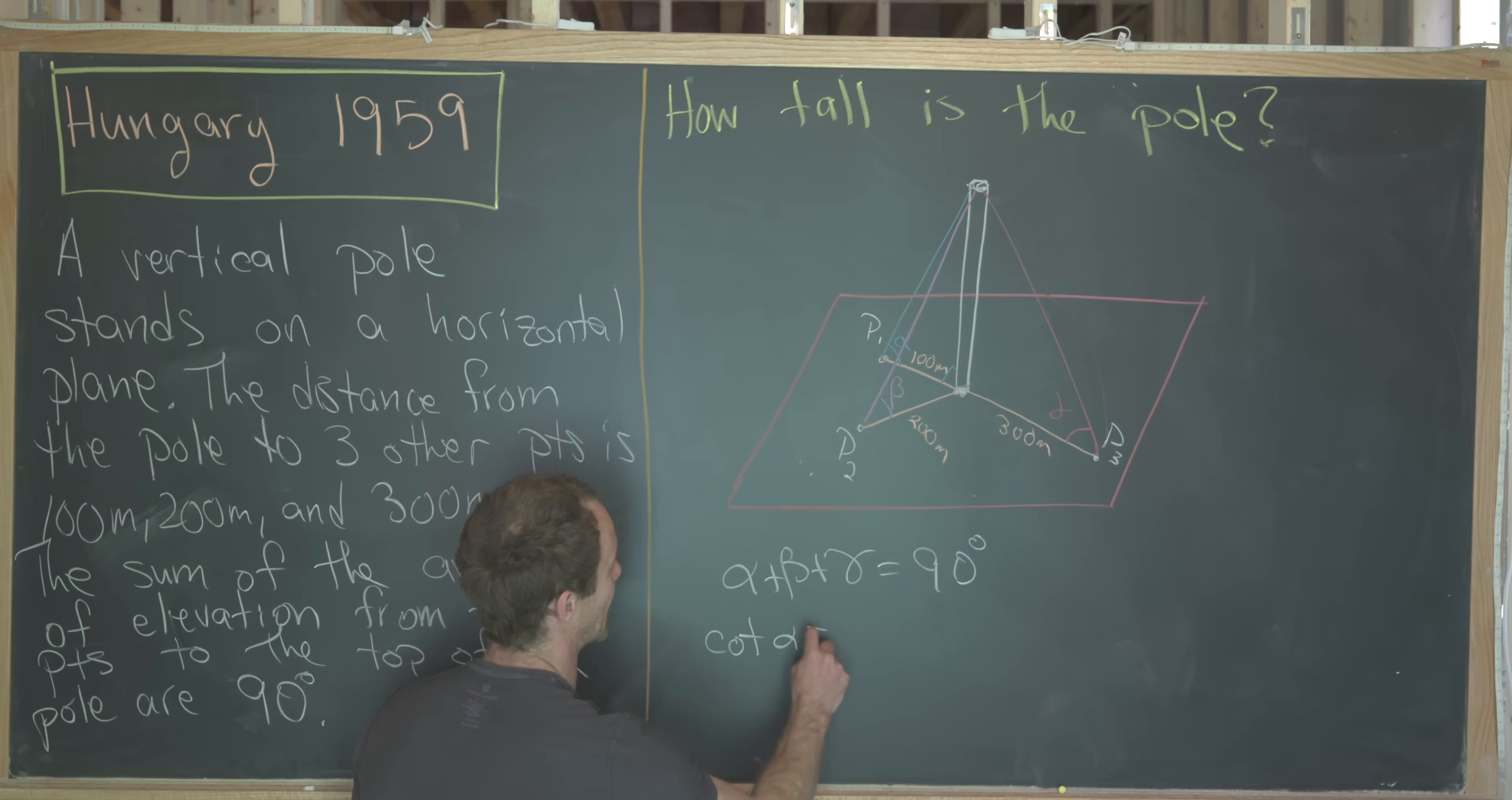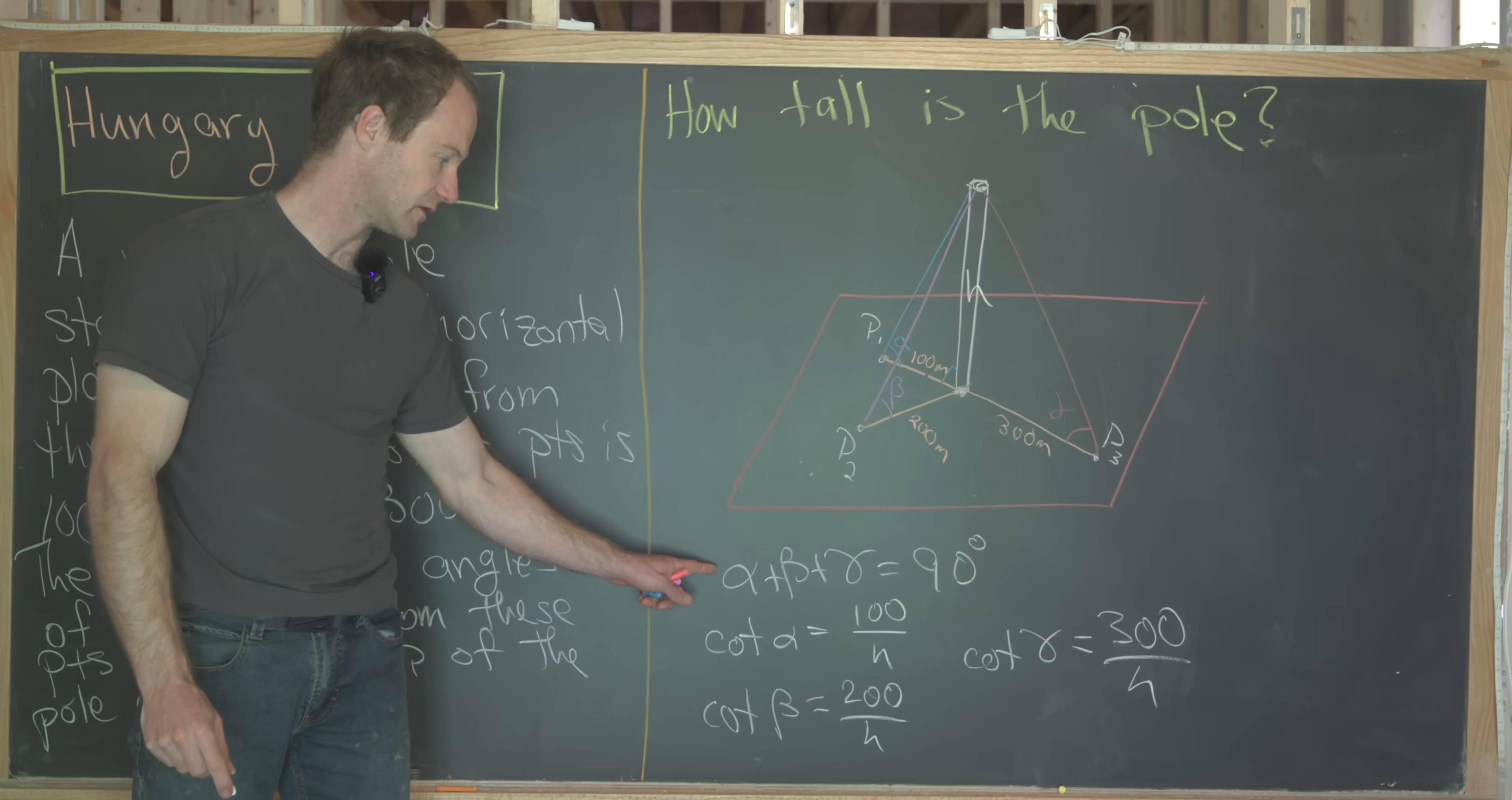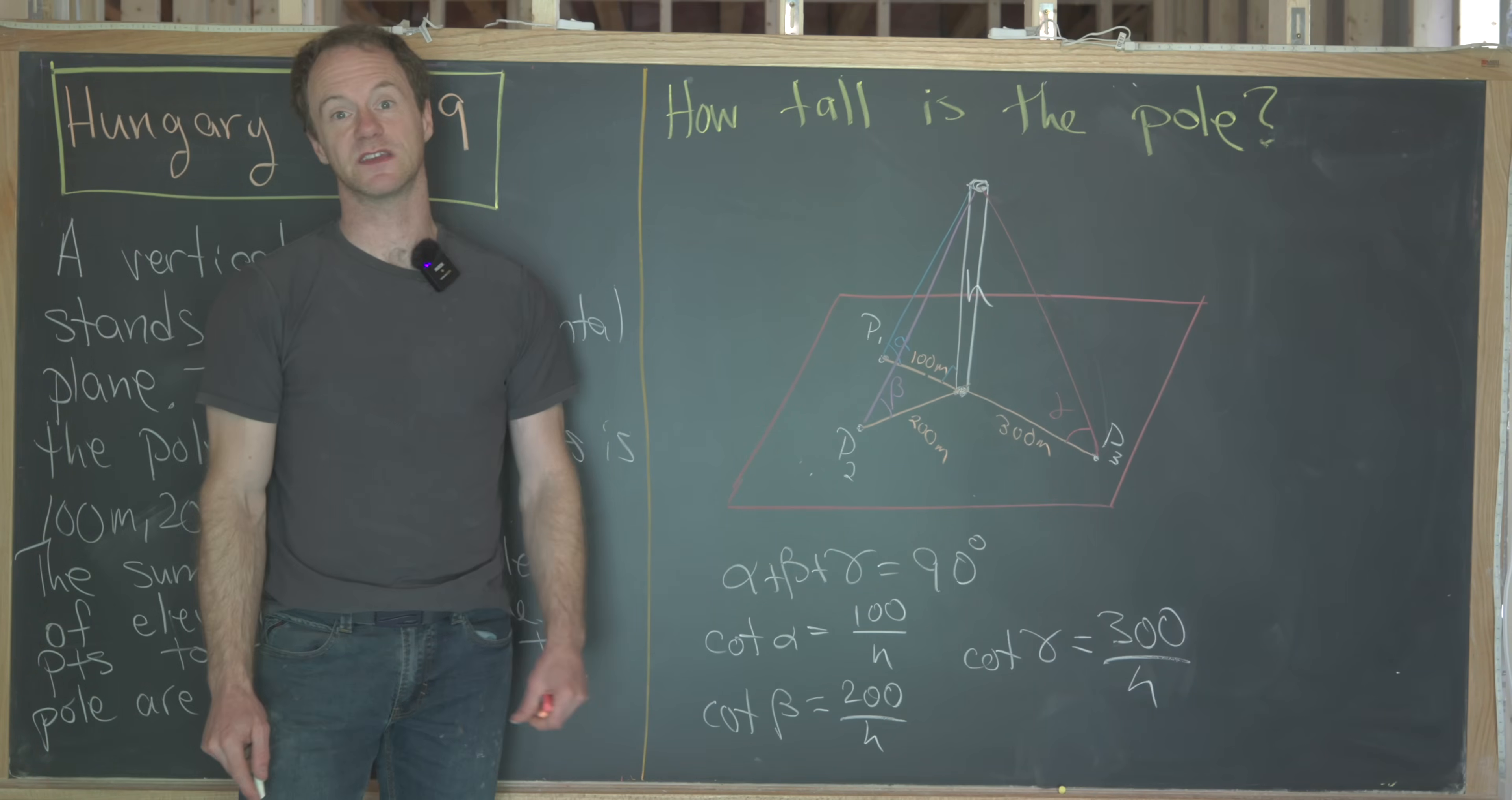So we know that the cotangent of alpha is adjacent over opposite, which will be 100 over the height of the pole, which we'll call h. So that's 100 over h. The cotangent of beta is going to be 200 over h for the same kind of reason. And then finally, the cotangent of gamma will be 300 over h. So we can look at this and we see four equations and four unknowns. We've got this equation, which is the sum of the angles, and then these three equations which have to do with the cotangent of each of those angles.